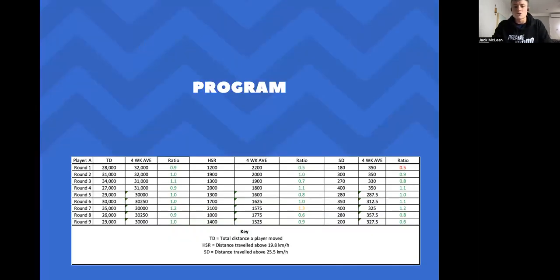So this is an example of how our program would look from a managing our running loads point of view. As I mentioned, there's strong research on the acute to chronic ratio, mainly from Tim Gabbett's work as well as others like Nick Murray. We will be looking closely at total distance, high speed running and sprint distance as our three metrics. Total distance simply being the distance including walk, jog, running, sprinting, so everything the player is doing. Whereas high speed running is 19.8 kilometers per hour and above and sprint distance is 25.5 kilometers per hour and above.